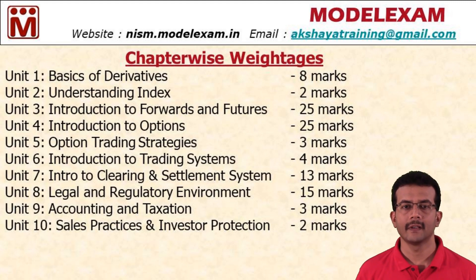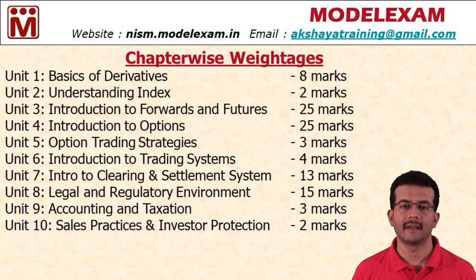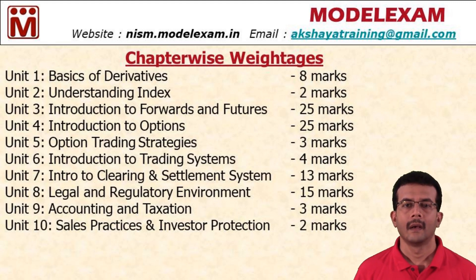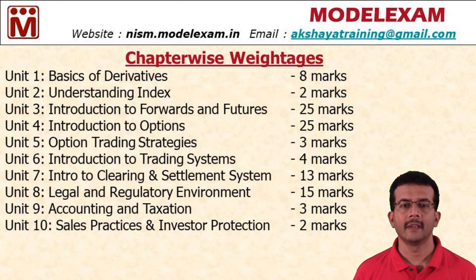The chapters which are very difficult and which you can skip are Unit 5 and Unit 9. Unit 5 is Option Trading Strategies — it is a bit tough and exhaustive. Only people who are already in the derivatives market can understand option trading strategies. The marks allotted for this chapter are only 3 marks. Unit 9, Accounting and Taxation, has a lot of terms from accounting.